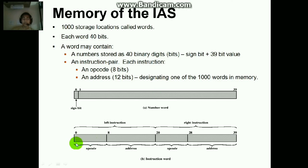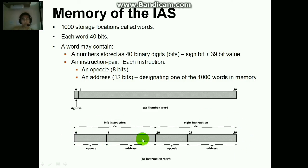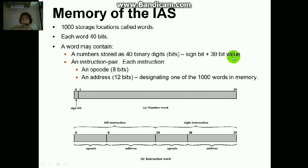The opcode part stores 8 bits and the address part stores 12 bits. Therefore we can have two instructions in a word: the left instruction from bit 0 to 20 and the right instruction from bit 20 to 39. If we store a number, we have one sign bit from position 0 to 1, and from 1 to 39 we have the bit value.